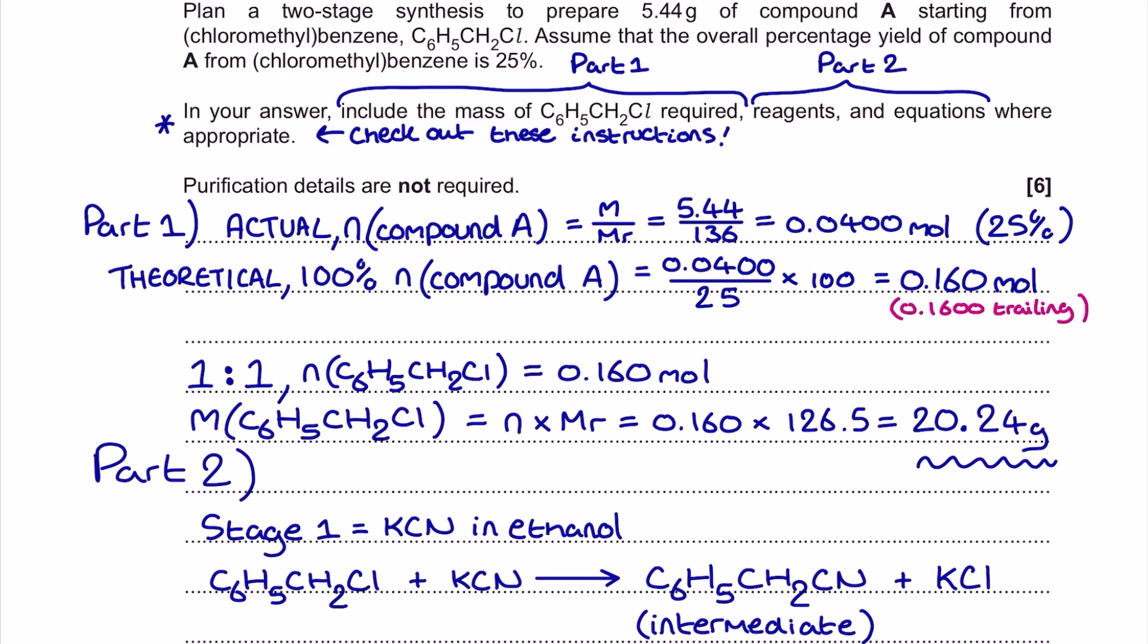So what I'm going to do is I'm going to transform this actual number of moles into a theoretical number of moles that I should aim to make and then accept that three quarters of it is going to go elsewhere. So what I'm going to do is take that mole value and divide it by 25 to get me a 1% figure, and then multiply by 100 to figure out what mole value I should aim to make and then that 25% yield will be achieved from that.